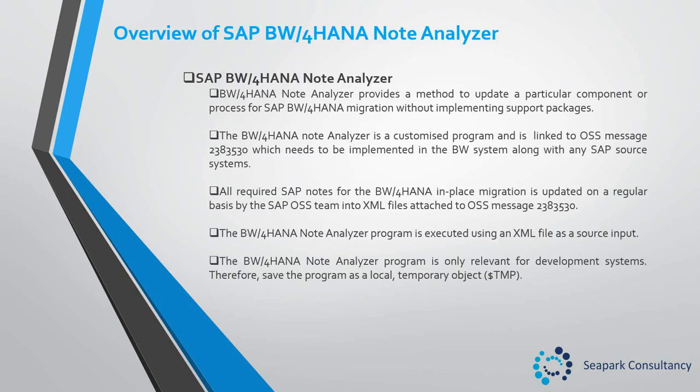The BW4HANA Note Analyzer provides a method to update a particular component or process of the SAP BW4HANA migration without implementing support packages. It is a customized program linked to OSS message 2383530, which needs to be implemented in the BW system along with any SAP source systems. All required SAP notes for the BW4HANA in-place migration are updated on a regular basis by the SAP OSS team into XML files attached to OSS message 2383530. The BW4HANA Note Analyzer program is executed using these XML files as a source input.